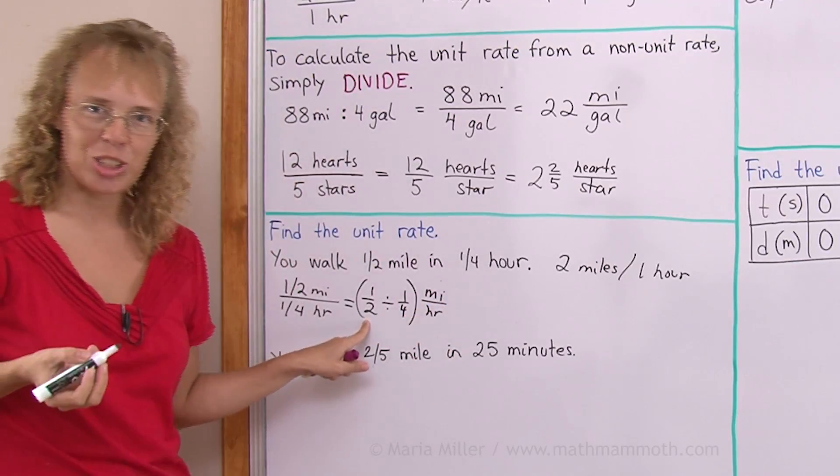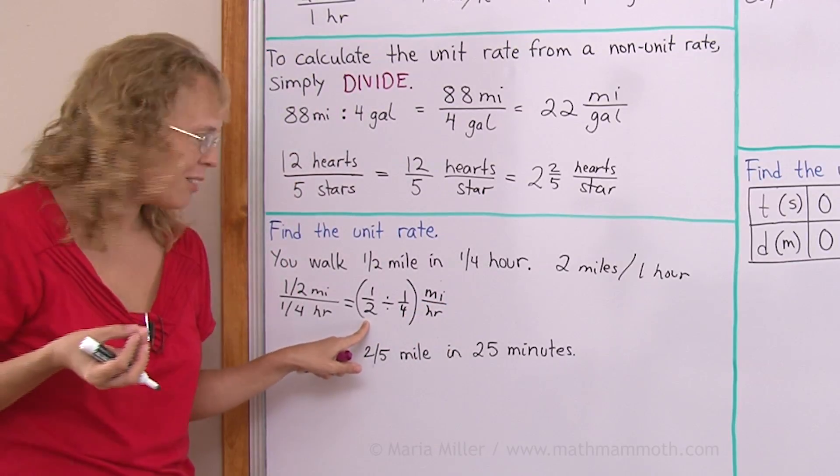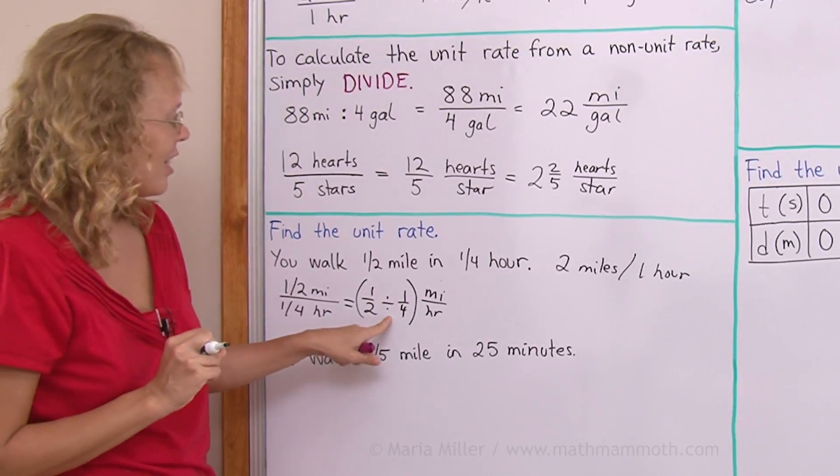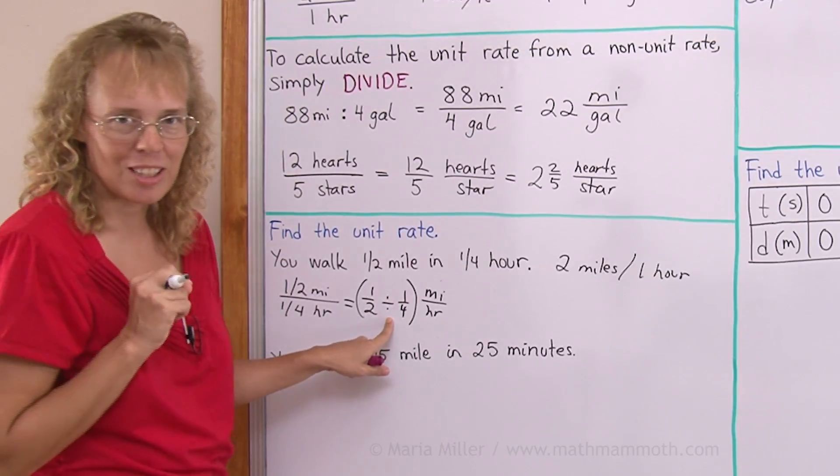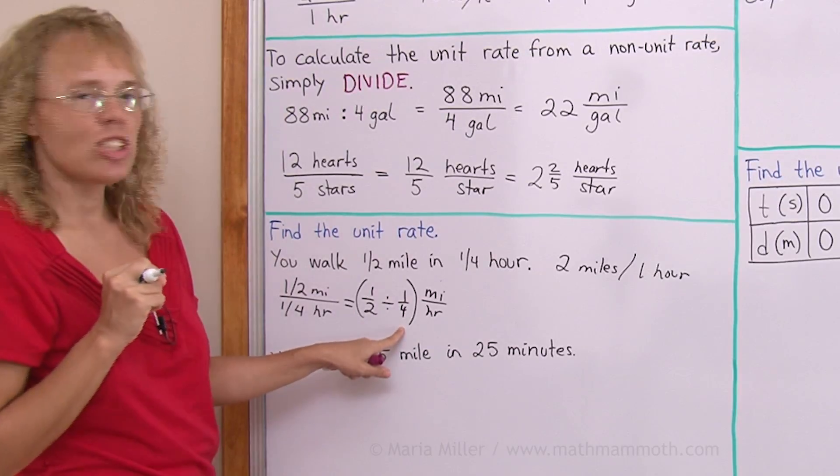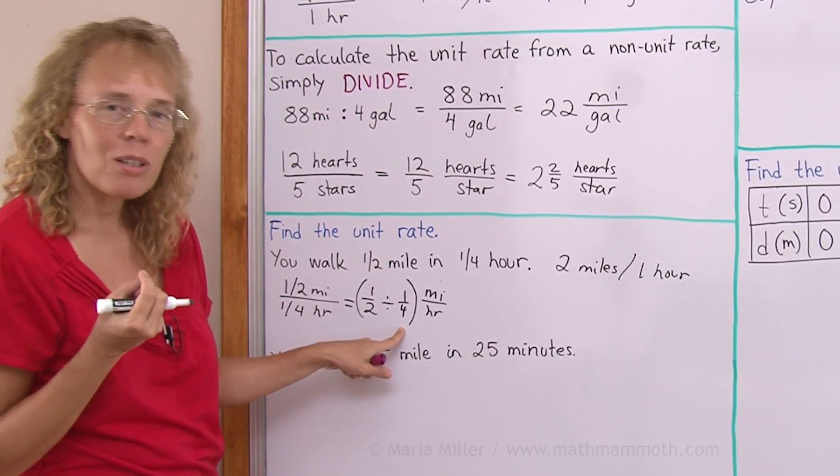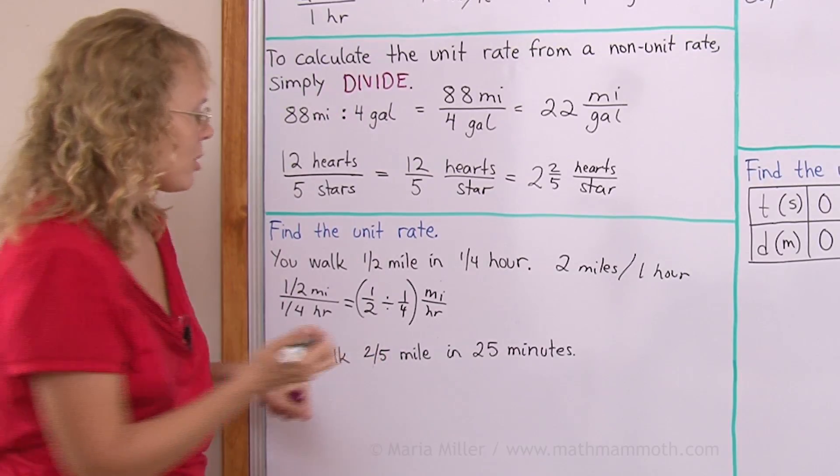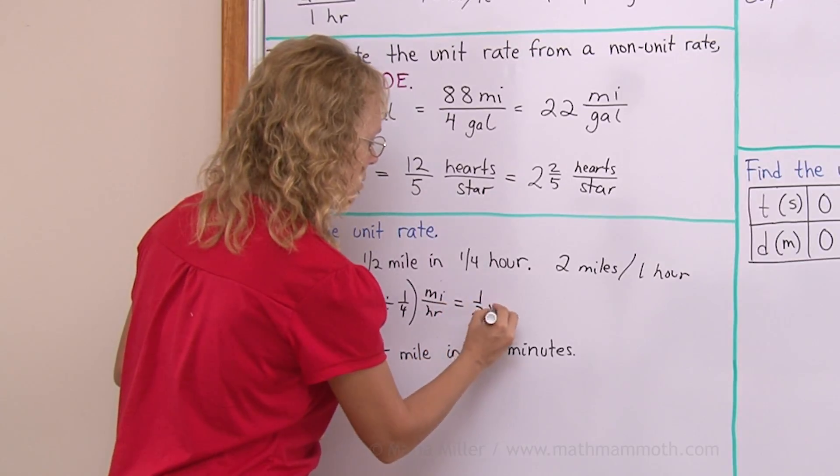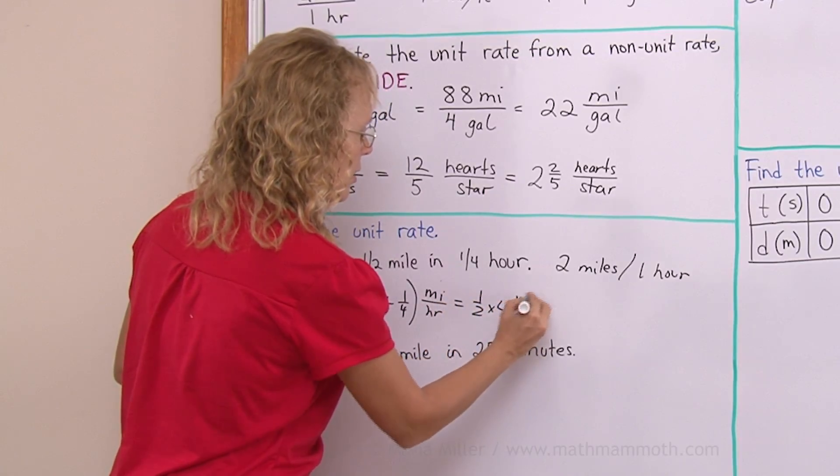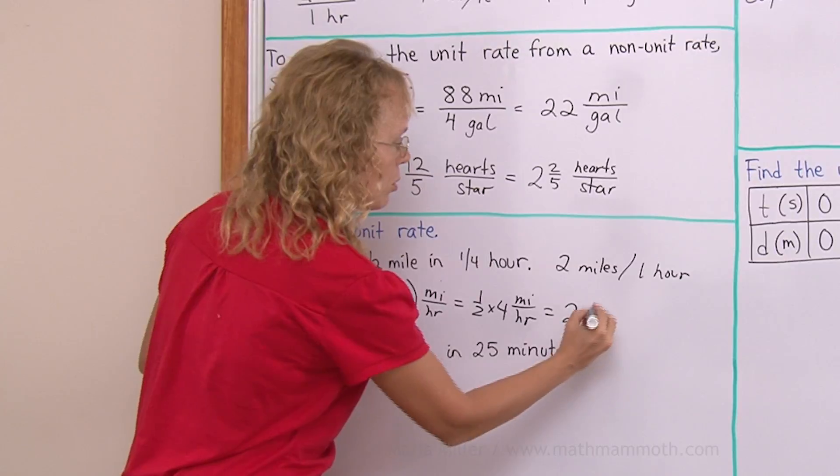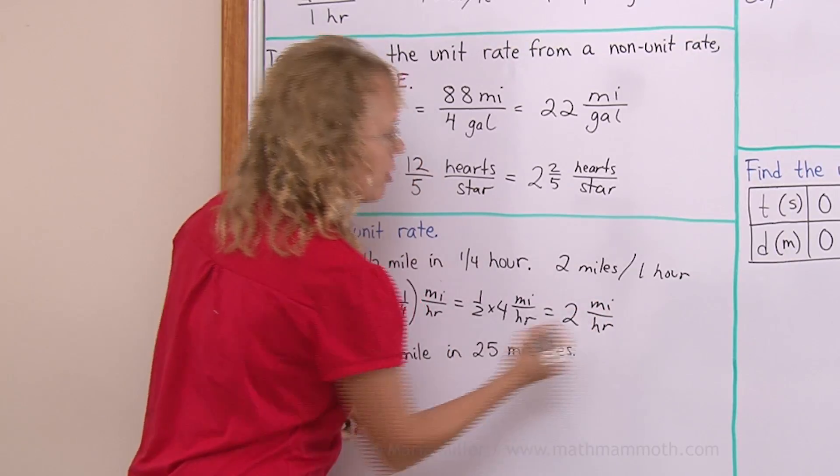And now in fraction division, remember how that was done? You need to remember by this point. The division changes into a multiplication. And then this changes into its reciprocal number, which is four. So it is going to be half times four miles per hour, or two miles per hour, of course.